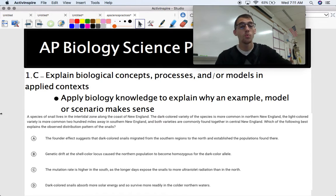And then finally, for science practice 1, 1.C is explaining biological concepts, processes, and or models, but in an applied context. So it's going to be kind of the same thing as 1.B, except it's going to be in a context of a larger study or an experiment, that kind of thing. All right, so check it out.